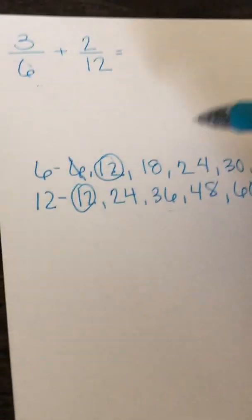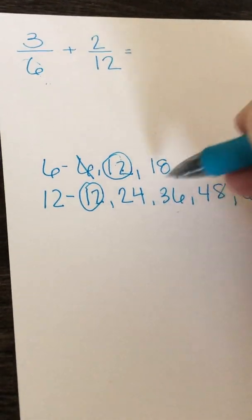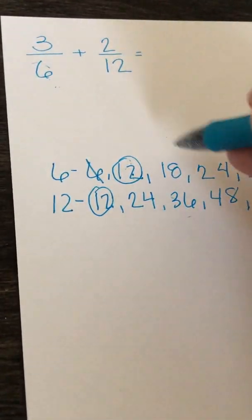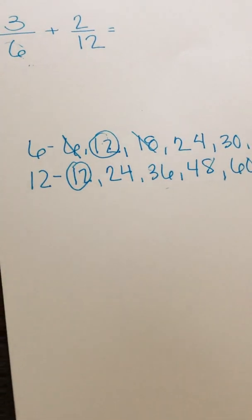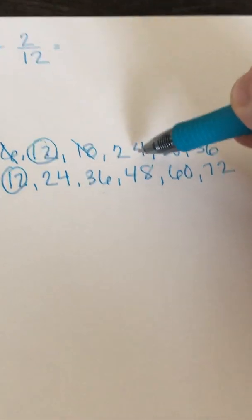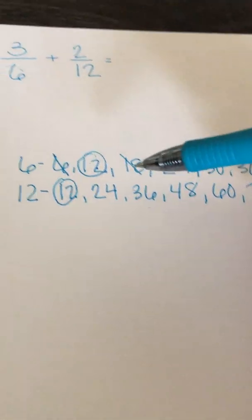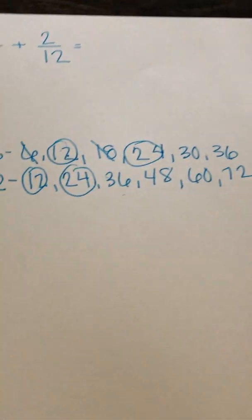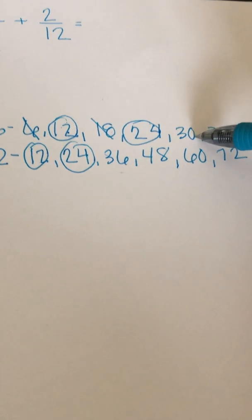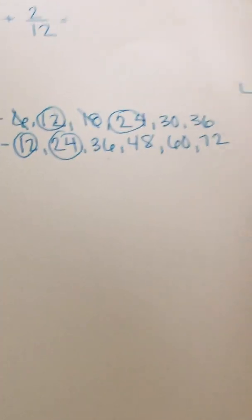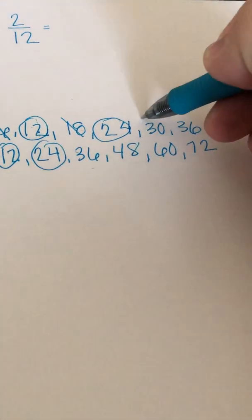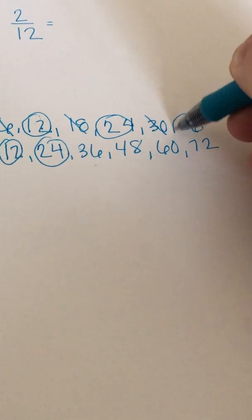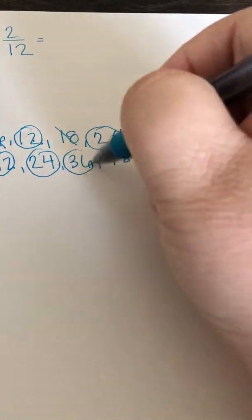Now we go to the next number, 18. Do we have 18 in 6 and in 12? It's in 6, but it is not in 12. So that is not a common multiple. Now we look at 24 — is there 24 in both 6 and 12? Yes, there is: 24 and 24. Now our next number in 6s is 30. Do we have 30 in both? Nope, just in one. So we cross it off. Now we go to 36 — there's a 36 in 6 and a 36 in 12.